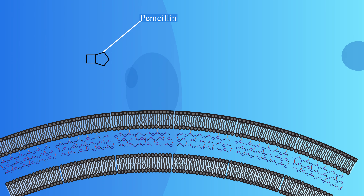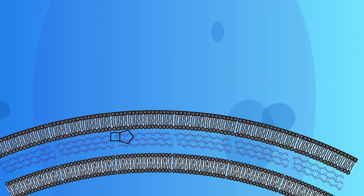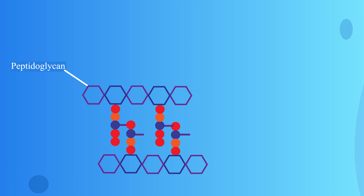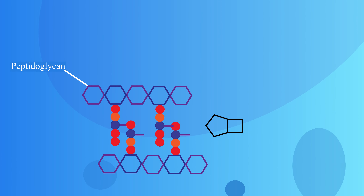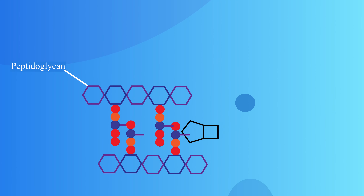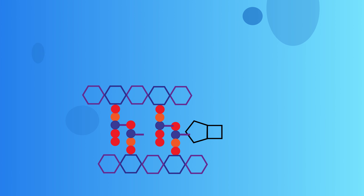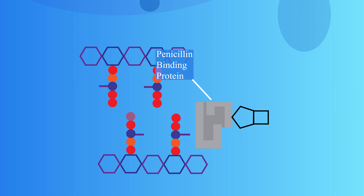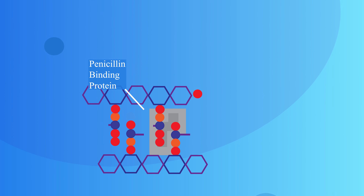Let's talk about penicillin. Penicillin is an antibiotic which breaks down peptidoglycan. But how does it actually do this? Instead of actually breaking down the pre-made structure, it interferes with the synthesis of peptidoglycan.